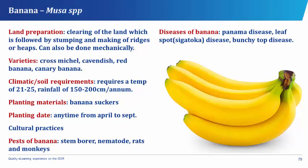Banana is planted anytime from April to September. Banana's cultural practices include weeding, mulching, fertilizer application, pruning, and pest control. The pests that disturb bananas are the stem borer, the nematode, and rats and monkeys. While diseases suffered by bananas are the Panama disease, the leaf spot or the Sigatoka disease, and the bunchy top disease.